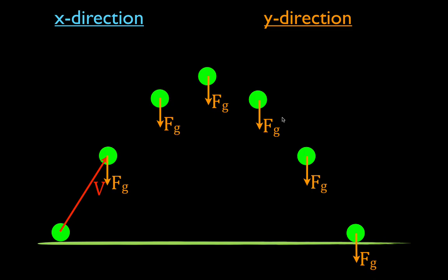A lot of people think there must be some force acting in the x direction because the ball is moving horizontally. But once it leaves the point where it's been projected, there are no other forces causing the object to move in the x direction. Objects in motion stay in motion unless acted upon by an unbalanced force. There's only one force acting on the object — the force of gravity — and that acts in the negative y direction. Once it leaves the ground, there are no forces acting in the x direction.